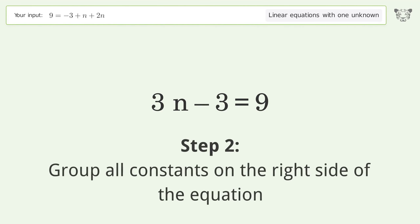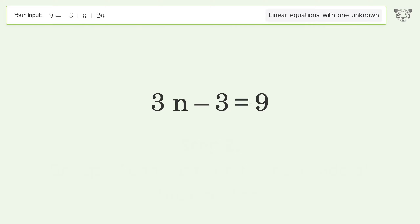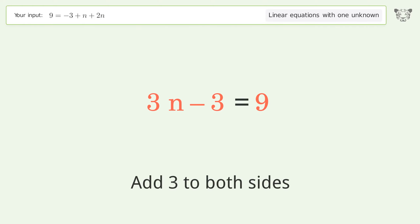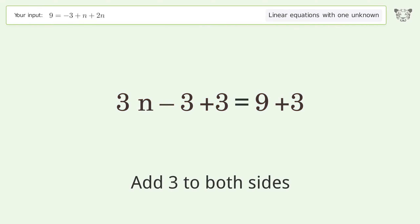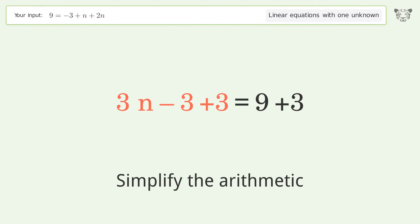Group all constants on the right side of the equation. Add three to both sides, then simplify the arithmetic.